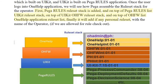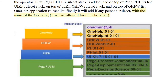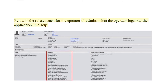On top of the PEGA Rules list, the UI Kit rule set stack is added. On top of UI Kit, the OHFW rule set stack is added. On top of the OHFW list, the One Help application rule set list is added. Finally, if rule check-out is enabled, a personal rule set with the operator's name is added at the top.